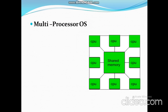Next is the multi-processor operating system. A multi-processor system consists of several processors that share a common physical memory. In this system, all processors operate under a single operating system. It provides higher computing power and speed, allowing users to run multiple applications at the same time. All CPUs share the same memory, and execution of several tasks by different processors simultaneously increases the system's performance.